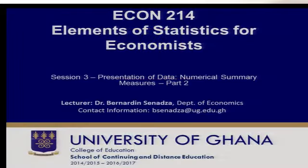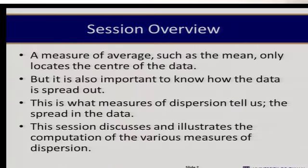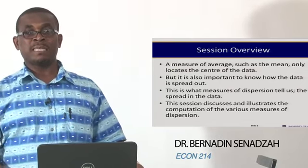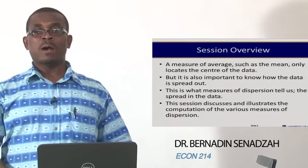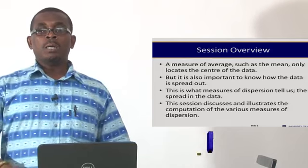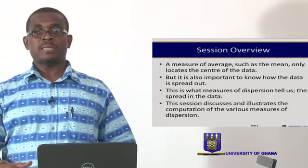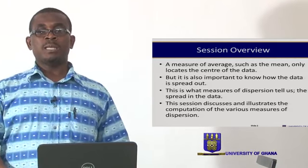Welcome to the continuation of session three. In this session we're looking at part two where we present numerical summary measures, this time looking at measures of dispersion. We just looked at central tendencies such as average, which locates the center of the data, but it's also important to know how the data is spread out — that is what measures of dispersion tell us: the spread in the data. In this session we will illustrate how to compute various measures of dispersion.